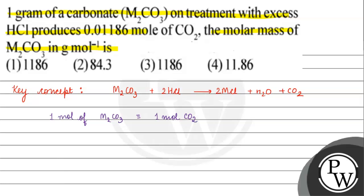From the balanced equation, 1 mole of M₂CO₃ produces 1 mole of carbon dioxide. So if we have 0.01186 moles of CO₂ produced, then we have 0.01186 moles of M₂CO₃.